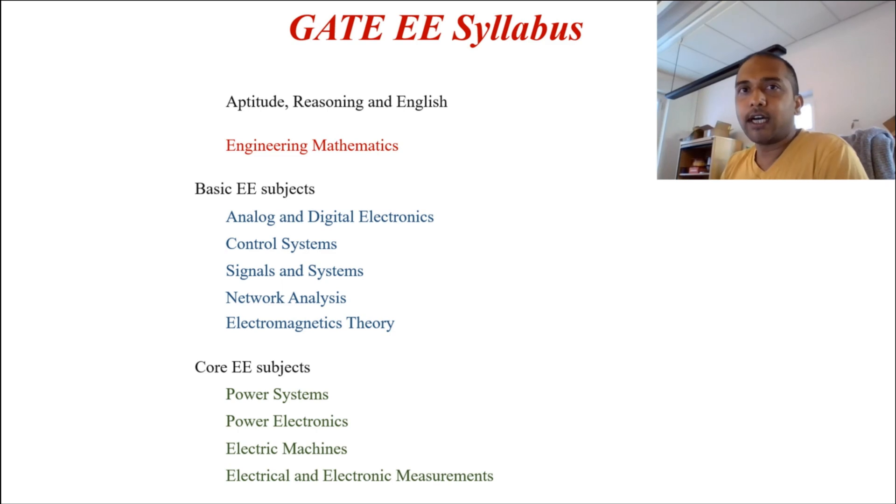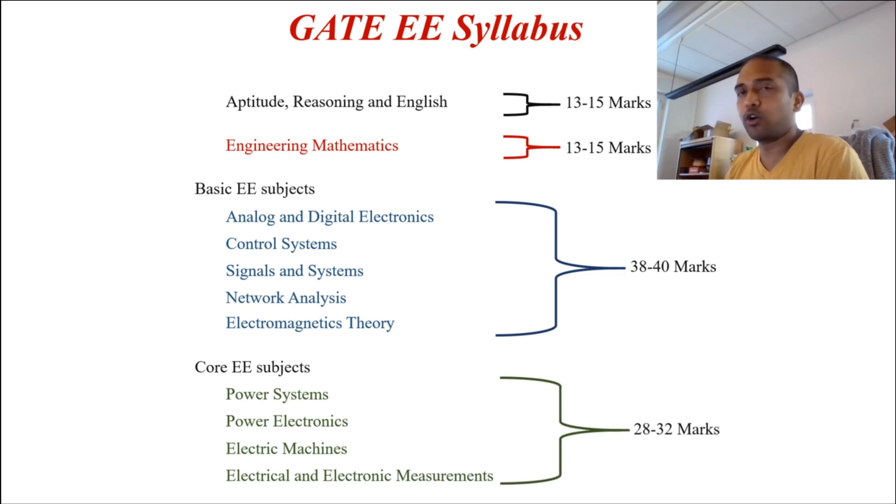So now let's look at how much weightage these sections have. Aptitude, reasoning and English will come for around 13 to 15 marks. Engineering mathematics, again 13 to 15 marks. And then you have the basic electrical subjects, which come around for 38 to 48 marks, but this can differ every year. And then you have the core electrical subjects, which come for 28 to 32 marks. Basically, the weightage within the basic and core subjects is different, but the aptitude and engineering mathematics usually come for 15 marks every year.